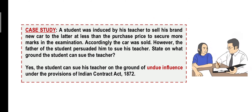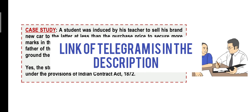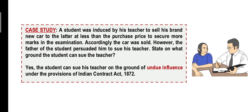So bachho, yeh tha the entire concept of coercion and undue influence. I hope you've understood it very clearly, and if you have any doubts do let me know in the comments below. In the next part of the video, we will cover the remaining three elements — fraud, misrepresentation, and mistake. Also, if you want the notes on Indian Contract Act, do join me on my Telegram group, the link for which is in the description below. Till then, thank you everyone, bye-bye.